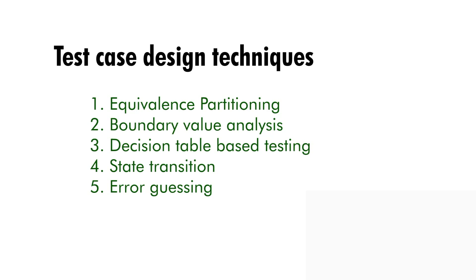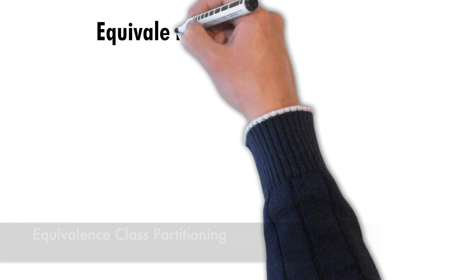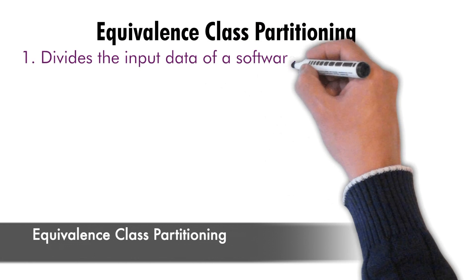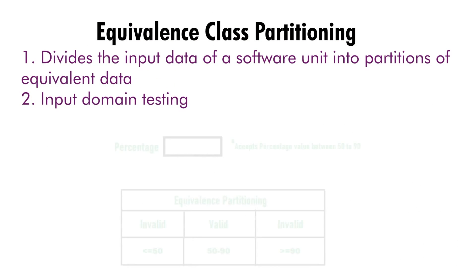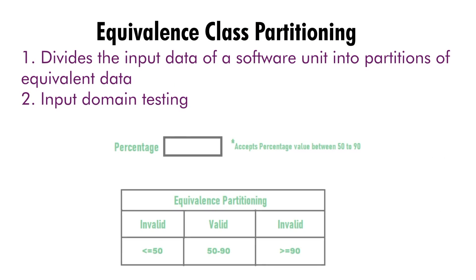First: equivalence class partitioning. Equivalence partitioning is a software testing technique that divides the input data of a software unit into partitions of equivalent data, from which test cases can be derived. In principle, test cases are designed to cover each partition at least once. It is an input-type domain testing technique — meaning values are verified in the input field or text boxes.